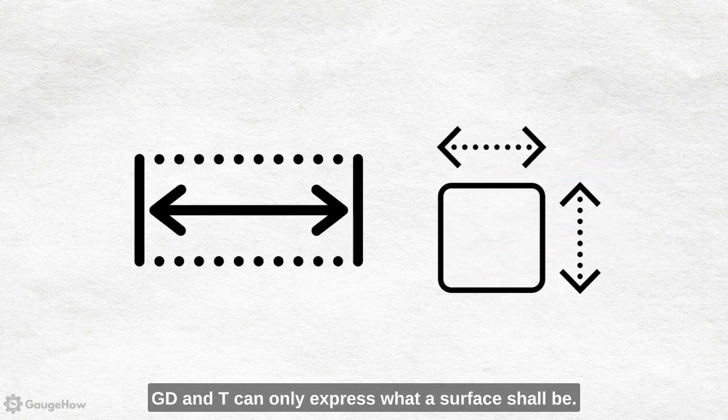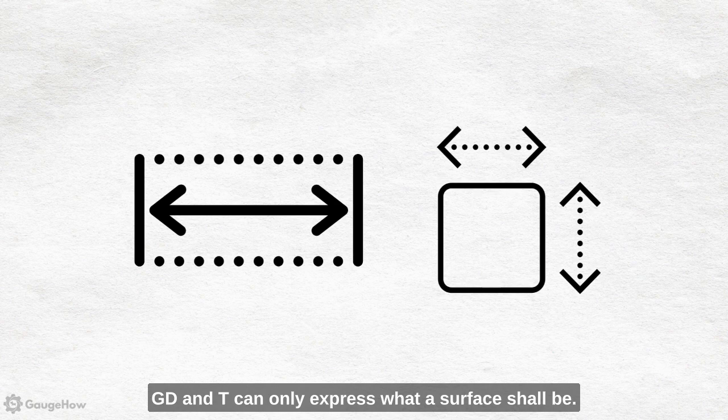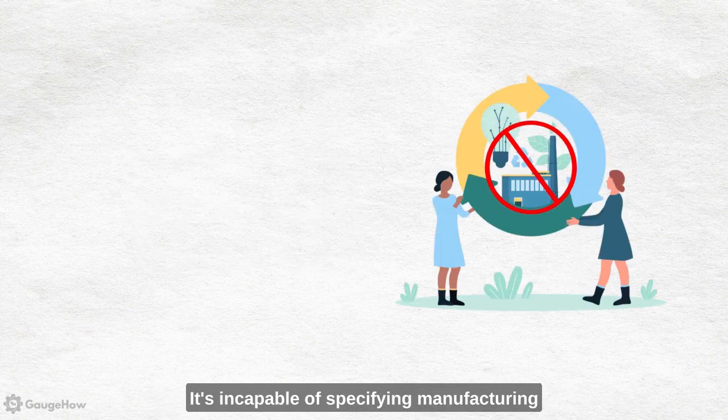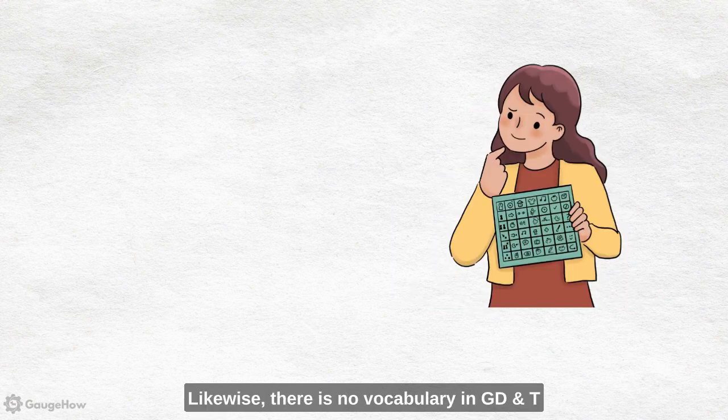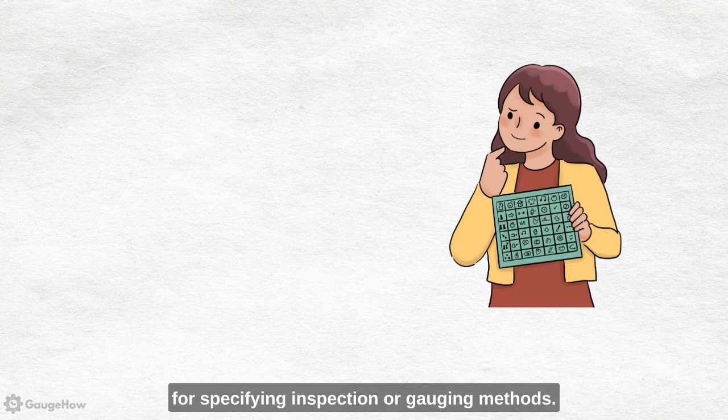GD&T can only express what a surface shall be. It's incapable of specifying manufacturing processes for making it so. Likewise, there is no vocabulary in GD&T for specifying inspection or gauging methods.